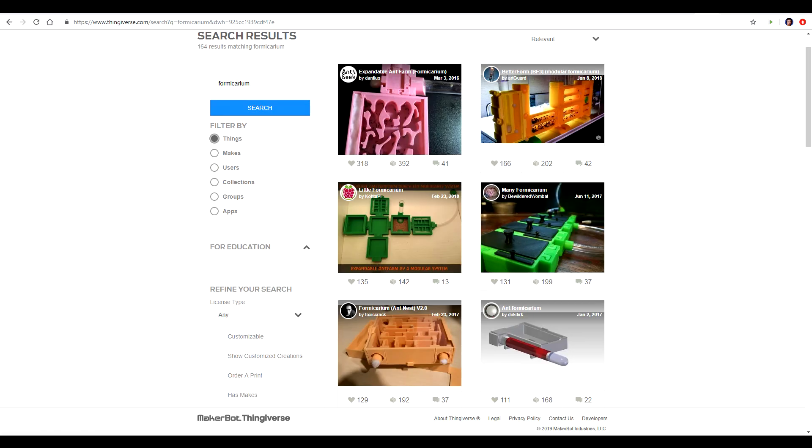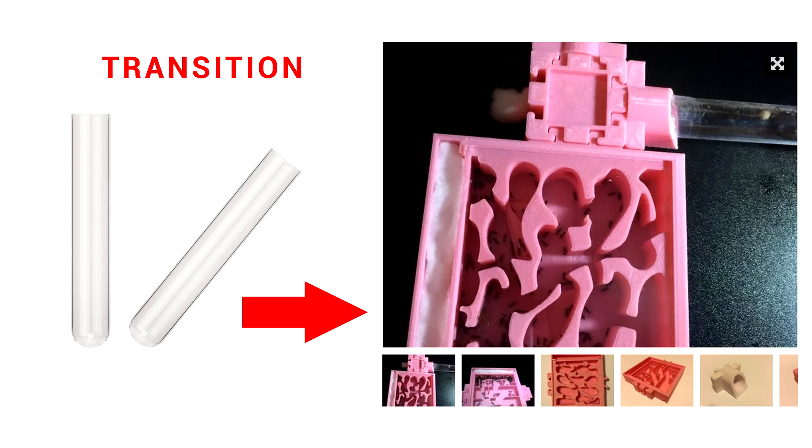There's many great free designs on Thingiverse and other places but there was a problem with all of those and that is the transition. It's possible to disrupt the colony if they move from a small test tube to too big a formicarium. So with that in mind I got designing.